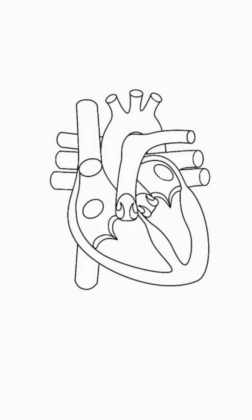This is the human heart, the powerhouse of our circulatory system. It's a muscular organ, made of strong involuntary cardiac muscle, about the size of a fist, located slightly to the left of your chest.